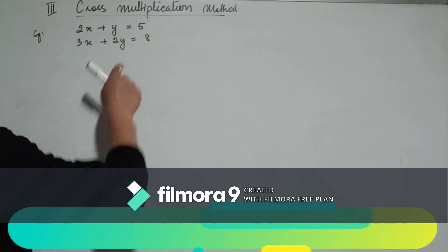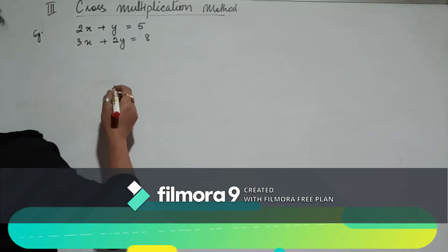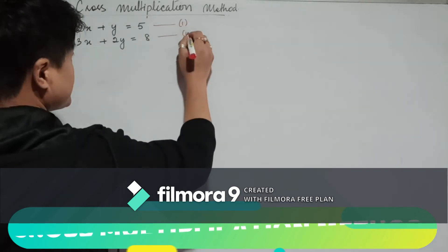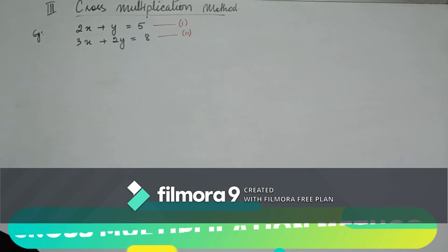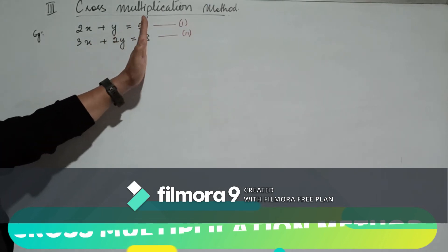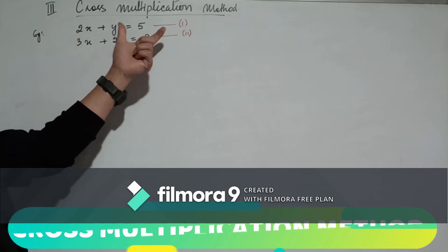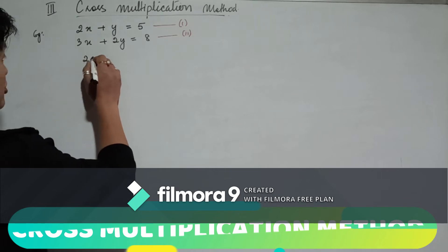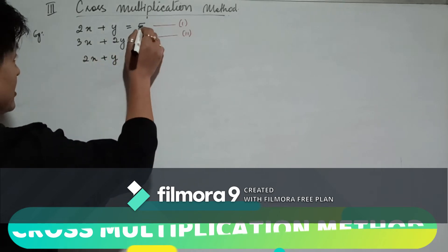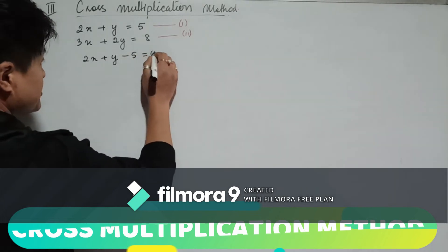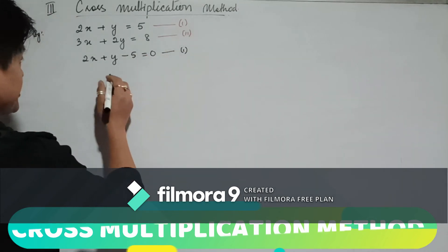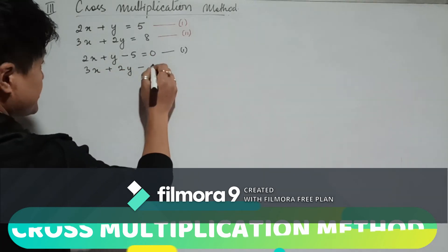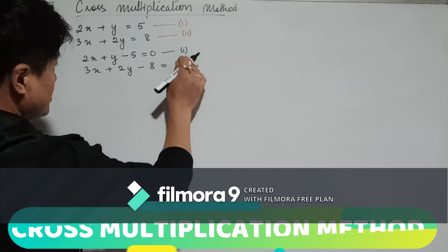The next method is your cross multiplication method — this is the third method. In cross multiplication, we first equate all terms to zero. So equation 1, 2x plus y equals 5, becomes 2x plus y minus 5 equals 0. And equation 2, 3x plus 2y equals 8, becomes 3x plus 2y minus 8 equals 0.